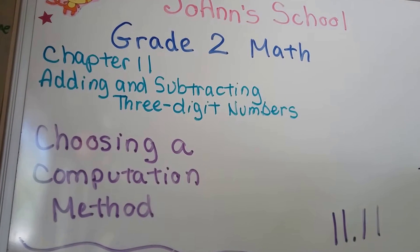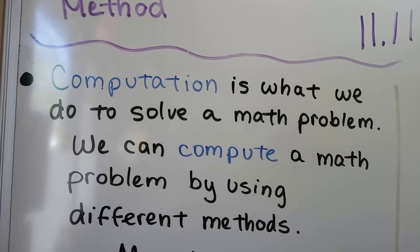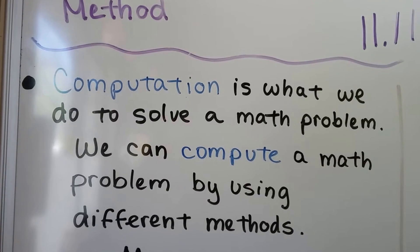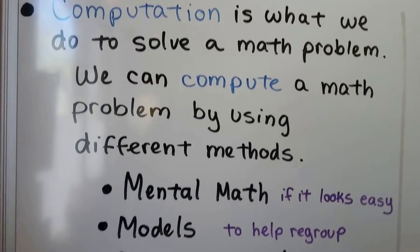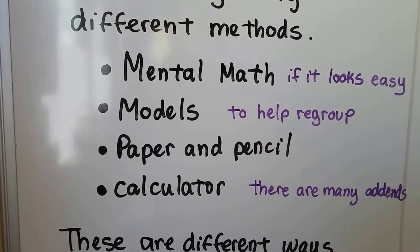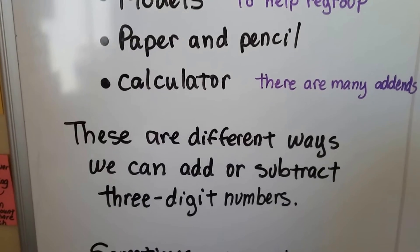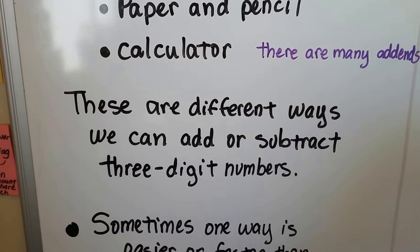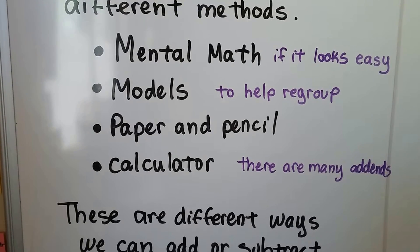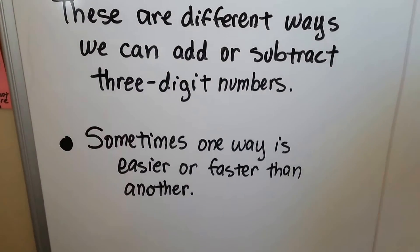Choosing a computation method - lesson 11.11. Computation is what we do to solve a math problem. We can compute a math problem using different methods. Notice the word 'computer' comes from 'compute.' We can use mental math, models, pencil and paper, or a calculator - these are all different ways we can find an answer to a math problem.